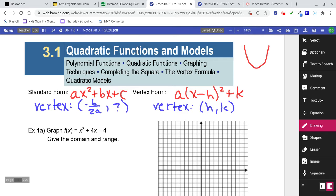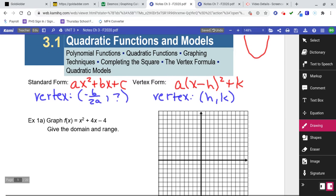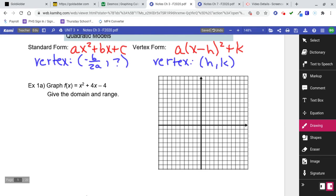Number one, example 1a, graph this thing, give the domain and the range. So I'm going to show you a couple of shortcuts for graphing. Obviously you could plug this in on Desmos, that would be the easiest thing to do. But you probably need to have some techniques for doing it by hand as well. First thing I would do is find the vertex.